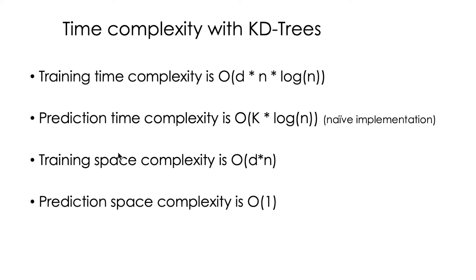The training space complexity is O(D·N). Here we basically need to save the tree in memory — this is why it takes N because we have N nodes, and D because all the nodes are repeated according to the number of dimensions we have. So this is why it's O(D·N) for saving the tree. And the space complexity for predictions is O(1), because after we save the tree, in order to predict we don't need any extra memory.